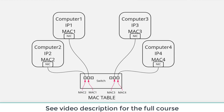I almost think of an IP address as like a phone number — it's unique. There are no two computers on this network with the same IP address. If two people had the same phone number, when you dial it, who would get that call? It doesn't work. We can't have IP address conflicts either, so every single computer needs a unique IP address.